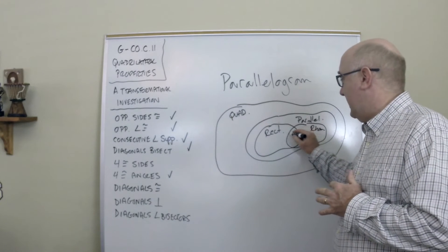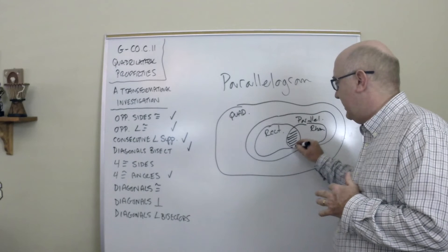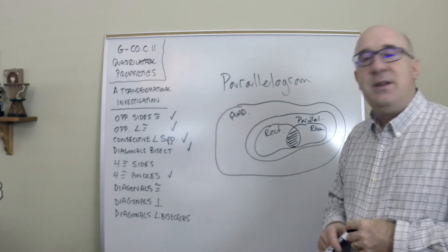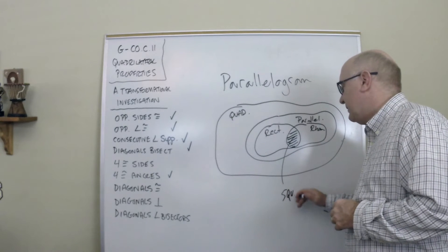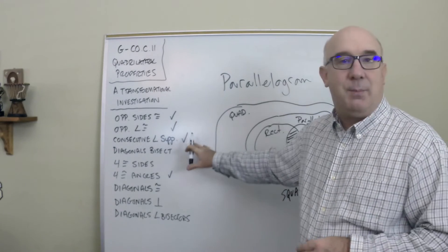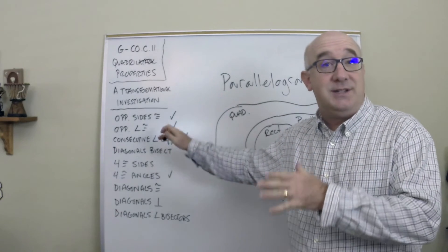It lands right in this region, and that of course is the square. The square is the most specific type of parallelogram because it has the parallelogram properties, but it's got the rhombus properties, it's got the rectangle properties—it's got everybody's properties.